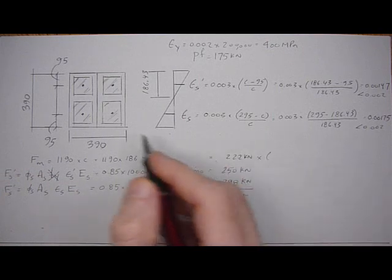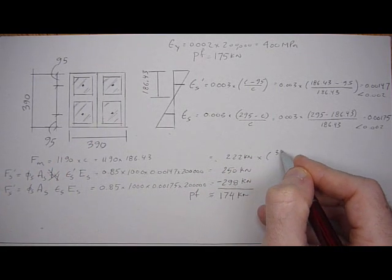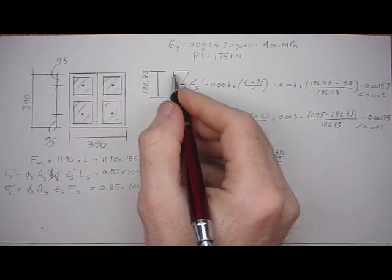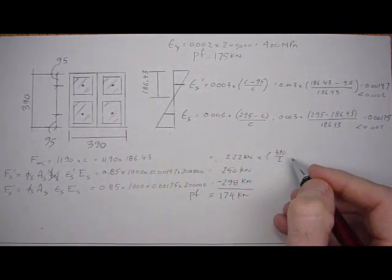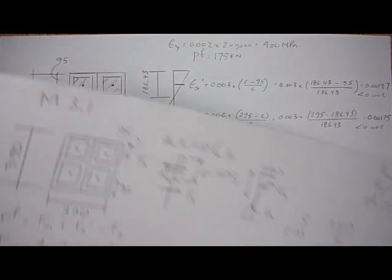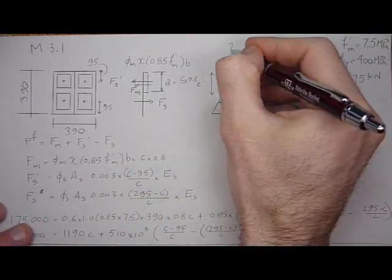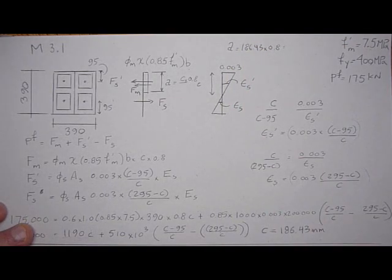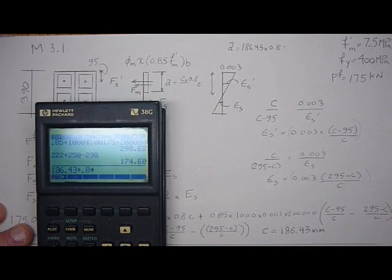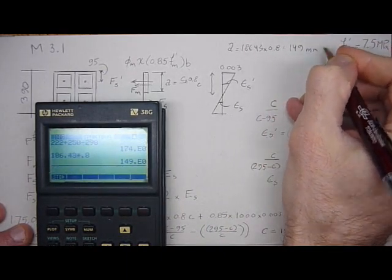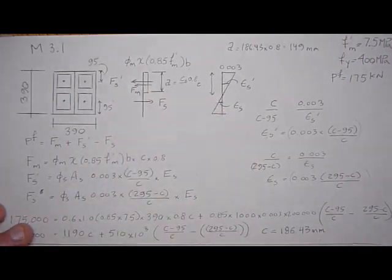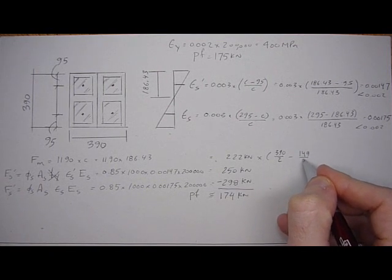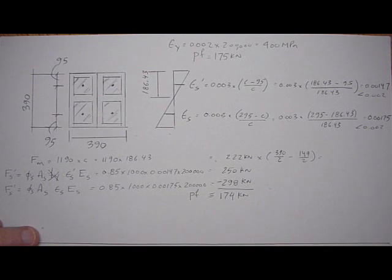Our lever arm is 390 over 2 minus A over 2. The A is the stress block, which is 186.43 times 0.8, equals 149 millimeters. That's the height of the stress block. Half the height is where the force occurs, 149 over 2. So 222 times (390 times 0.5 minus 149 times 0.5), that's 26.8 kilonewton-meters.